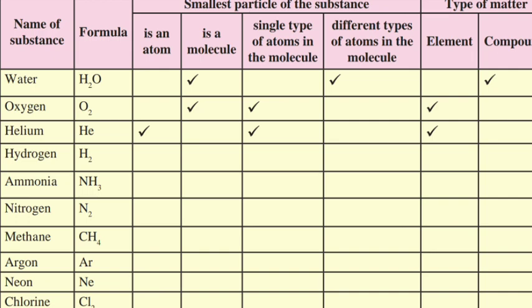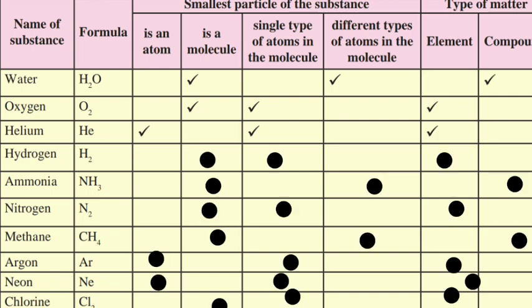Let us see hydrogen. Hydrogen is a molecule, single type of atom in the molecule, and it is an element. Now see ammonia. Ammonia is a molecule with different types of atoms in the molecule and it is a compound. Nitrogen is a molecule, single type of atom in the molecule, and it is an element. Methane is a molecule, different types of atoms in the molecule, and it is a compound.